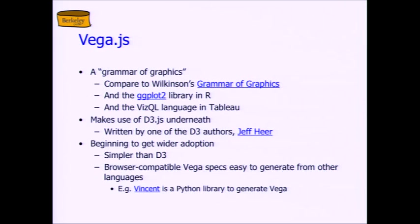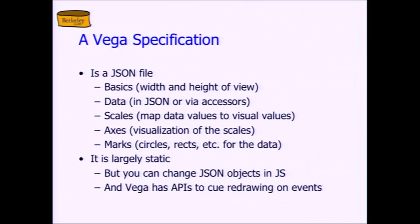Vega is a library over D3 for doing grammars of graphics in JavaScript — it uses D3 underneath. The author of Vega is Jeff Hare, the faculty advisor on the D3 project. Vega specifications are not code — they're just descriptive. You write no JavaScript at all; you write just a JSON object to describe your graph. It's totally declarative. Because it's not JavaScript code but just a spec, you can actually generate it from other languages. For example, there's a package in Python called Vincent — it generates a JSON object which is a Vega spec you can load into a web page. So although you're a Python programmer, you're generating stuff that loads up in a web page in JavaScript.